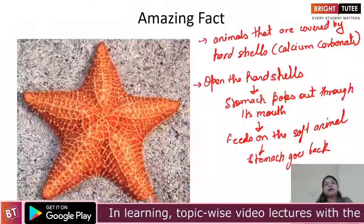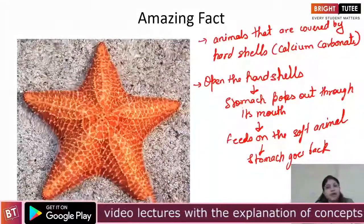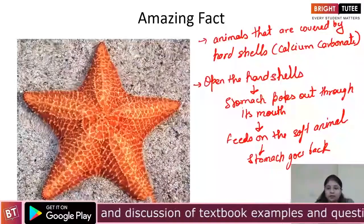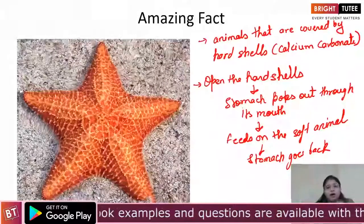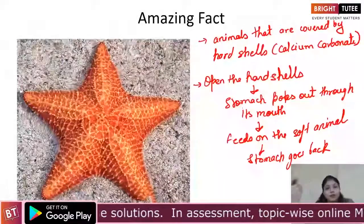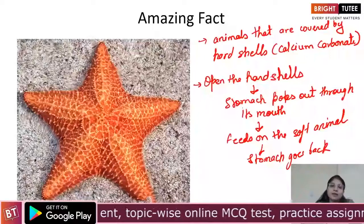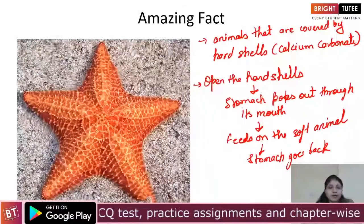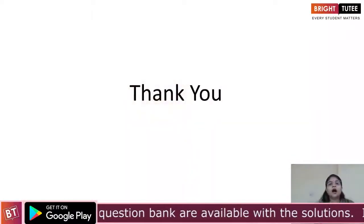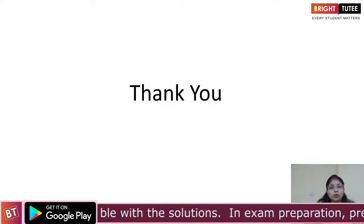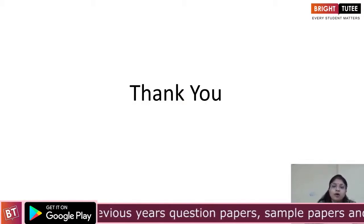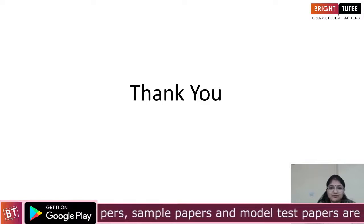So we see how different organisms eat different kinds of food and how varied the modes of obtaining food are. The mode of obtaining food largely depends on the kind of food the animal eats — for example, mosquitoes and lice feed by sucking because they feed on blood. In this way, we have understood the different modes of feeding in animals. In the next session, we are going to talk about the digestion of food in human beings. Thank you.